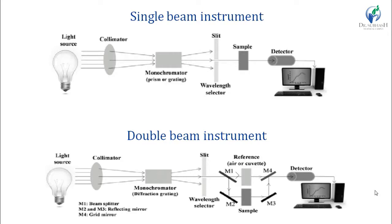Beam means radiation beam. In a single beam instrument, there is one sample holder — just the sample. In a double beam instrument, two sample holders are present: first is reference and second is sample. Reference means the standard of our sample. For example, if working with a paracetamol tablet, the pure standard powder of paracetamol with 95% purity is known as the reference.